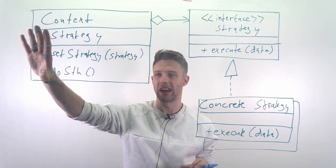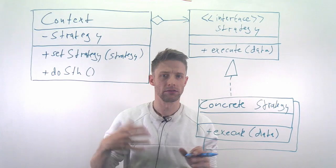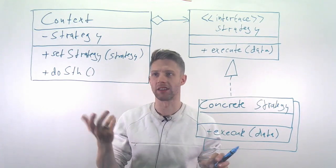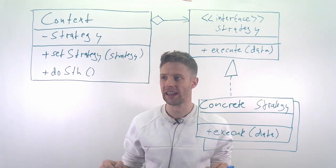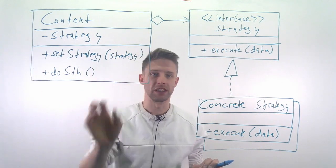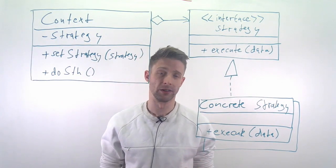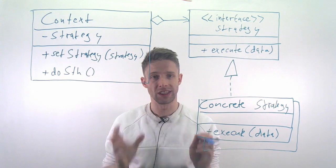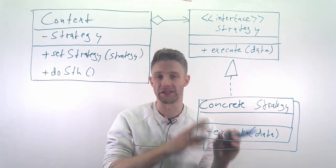Imagine for example a case where you have a navigation system, navigation application like you have in Google Maps or in many cars that tells you where to go and you of course have different algorithms, different routing algorithms.